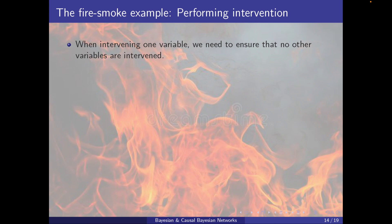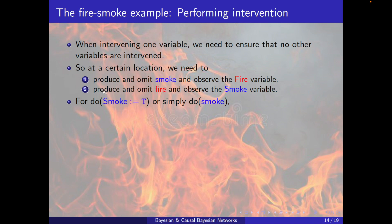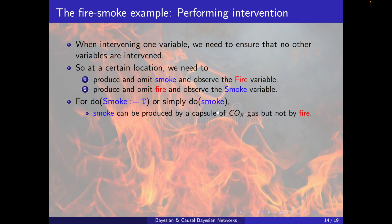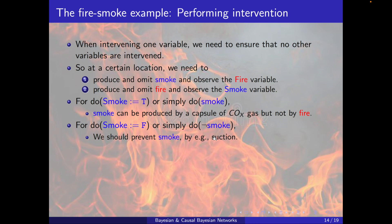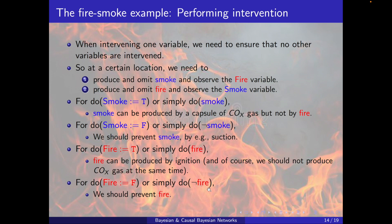Back to the fire-smoke example. When intervening on one variable, we must ensure no other variables are intervened upon. To do(smoke = true), we can produce smoke by a CO capsule, but not by fire, because then we would also be intervening on fire. Similarly, to do(smoke = false), we can prevent smoke by suction. To do(fire = true), we produce fire by ignition but should not produce CO gas at the same time. To do(fire = false), we simply prevent fire.